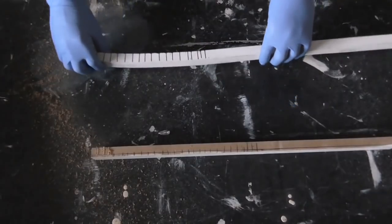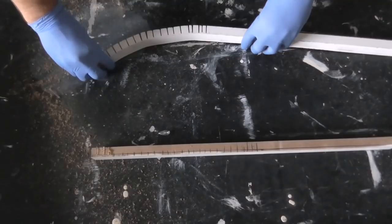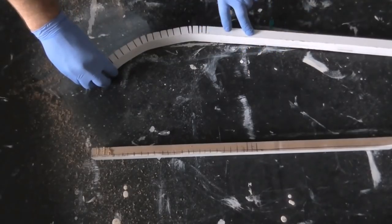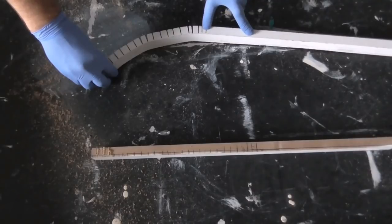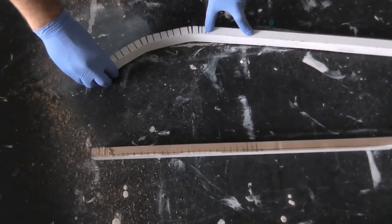And the same will apply for an internal curve, it will just bend the other way. Again, ensuring that your angle where the curve starts, your cuts go onto the straight.